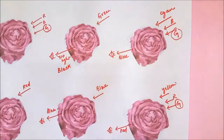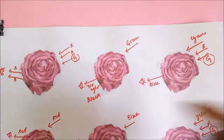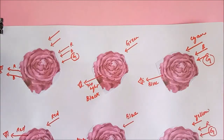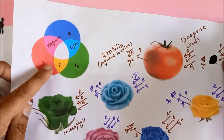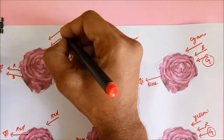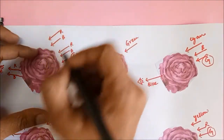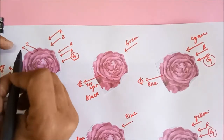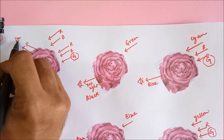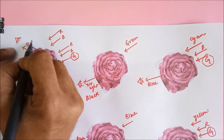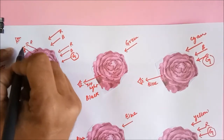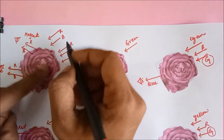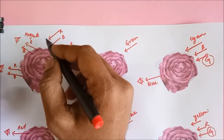Finally, if we impart magenta light — magenta is made up of red and blue — so red and blue are not going to get absorbed. Both of them are going to get reflected, hence reaching our eye. We see the mixed color of red and blue as magenta, so in magenta light this flower appears magenta.